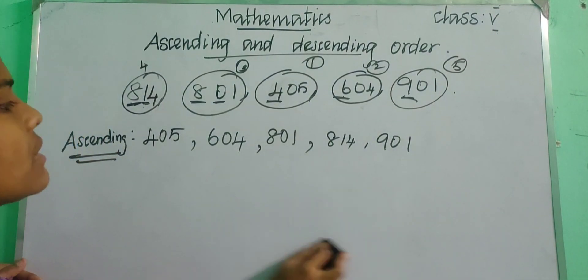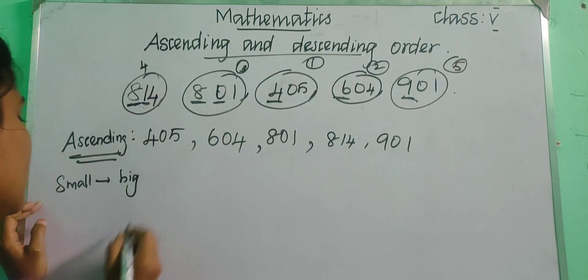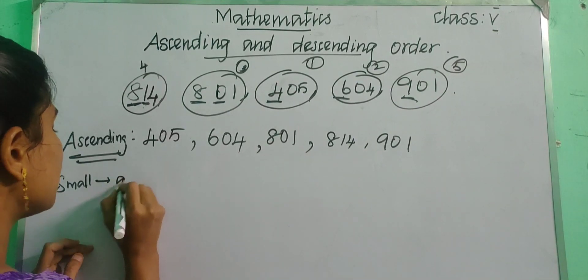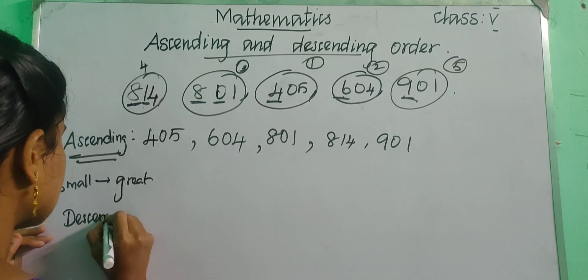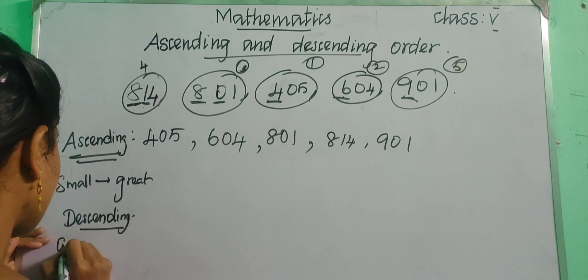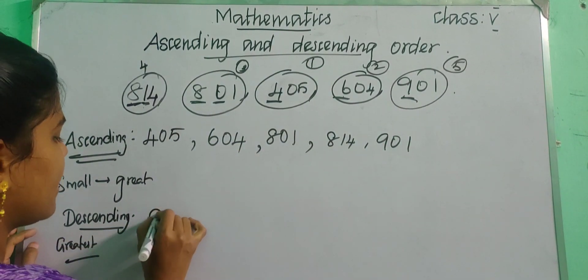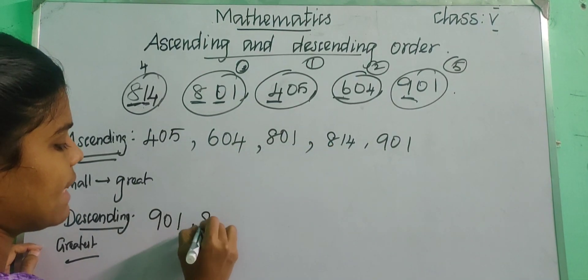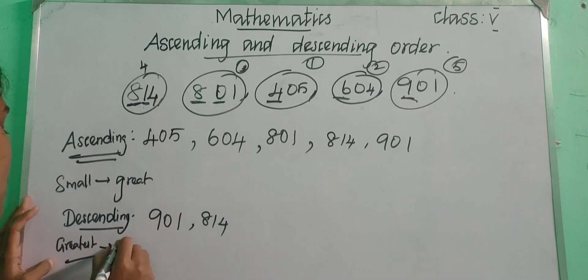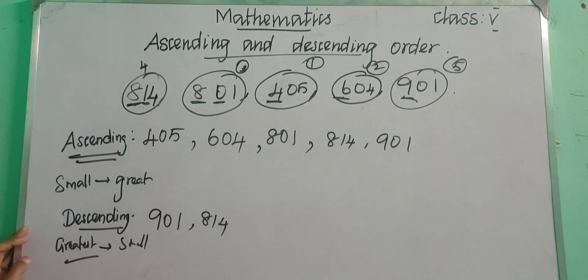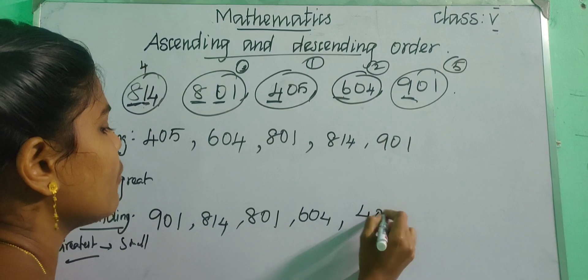How will you write descending order for all these numbers? Ascending means small to big — smallest number to the greatest number. Descending order means greatest number to smallest number. The greatest number here is 901. So we write 901 first, then the next greatest is 814, then 808, then 604, and at the last 405, which is the smallest one.